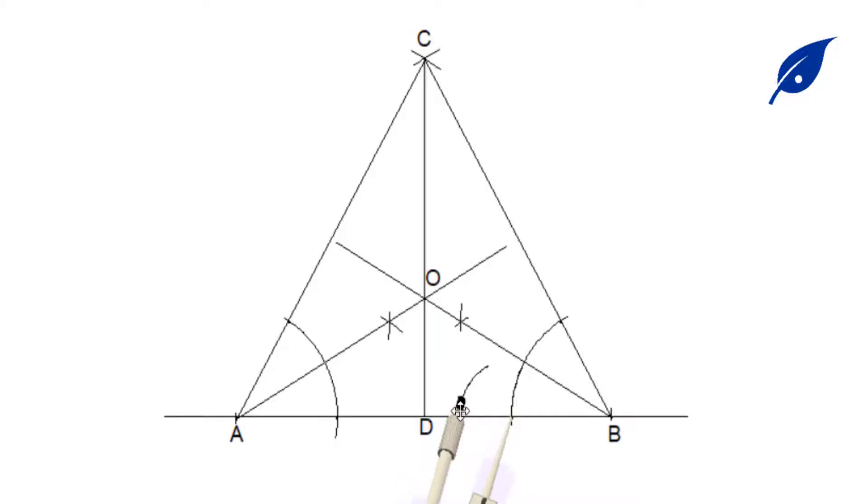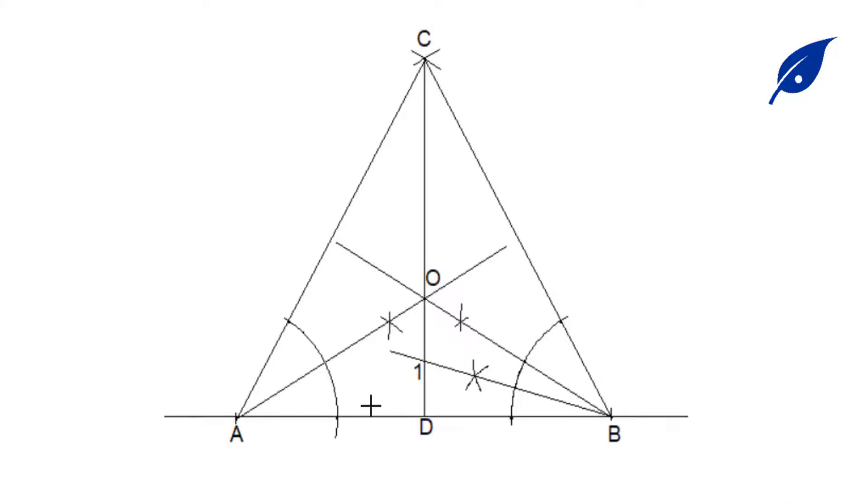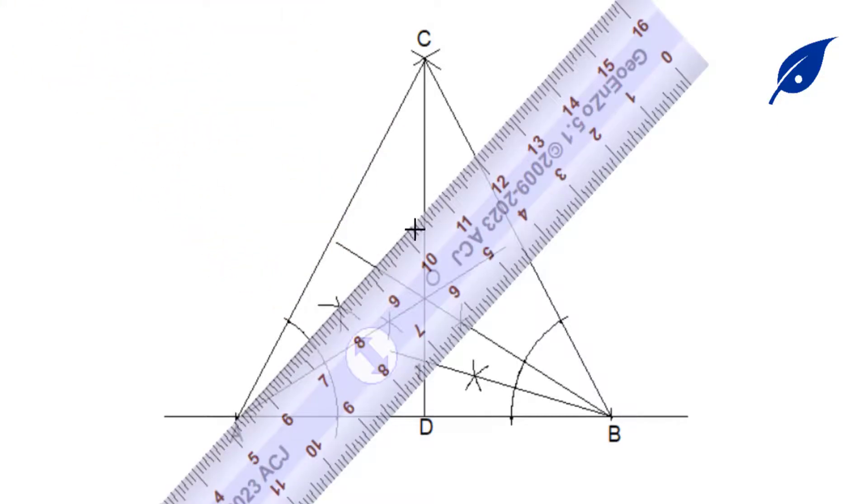The next thing is to bisect the angle OBD. After bisecting the angle OBD, where the line intersects the line OD, we'll label it as 1. That means that's the first point of our circle, the center of our first circle.